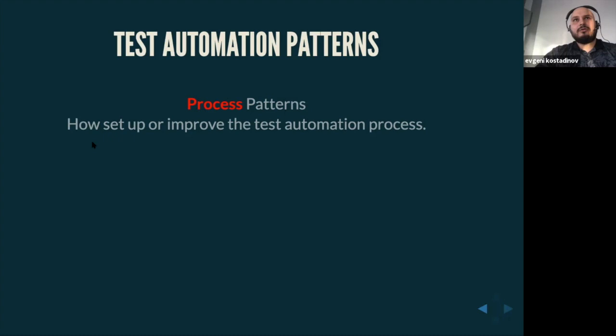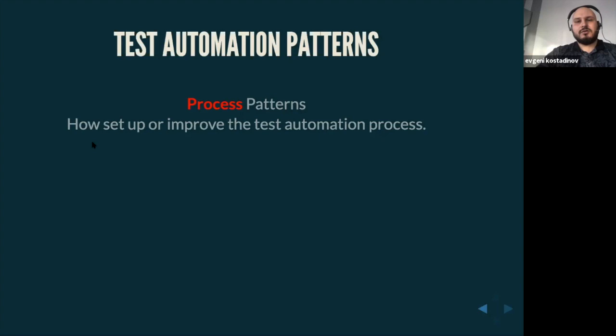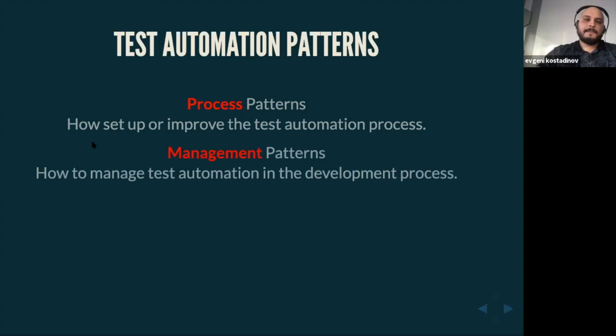When we talk about test automation patterns, we need to be aware that design is just one of many pattern types — there are also process patterns, because there's an entire ecosystem. Design of our code and tests is really just a small portion. Process patterns help us learn how to set up or improve the test automation process, whether starting from ground zero or evolving an existing solution, because software constantly evolves and we need to keep up with its complexity.